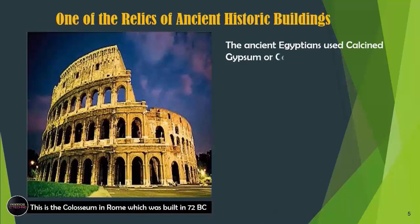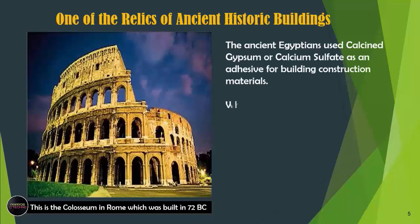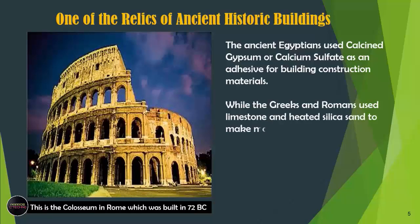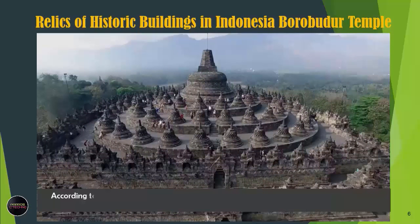One of the relics of ancient historic buildings is the Colosseum in Rome, which was built in 72 BC. The ancient Egyptians used calcined gypsum or calcium sulfate as an adhesive for building construction materials, while the Greeks and Romans used limestone and silica sand heated to make mortar or building adhesive.